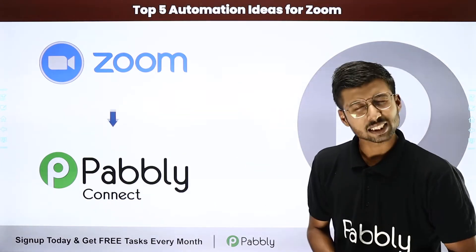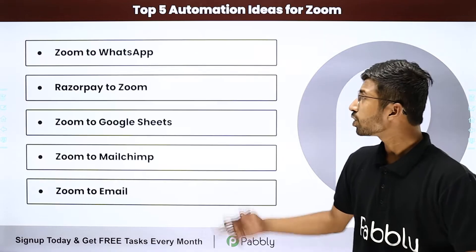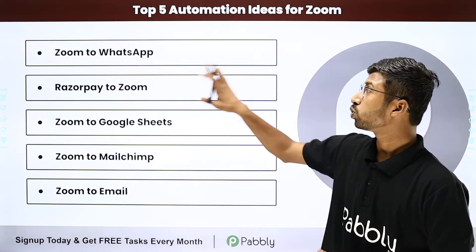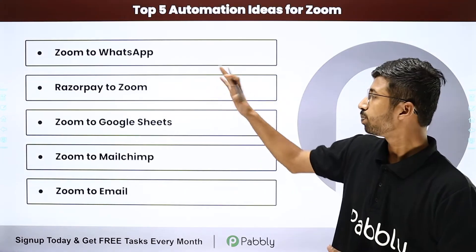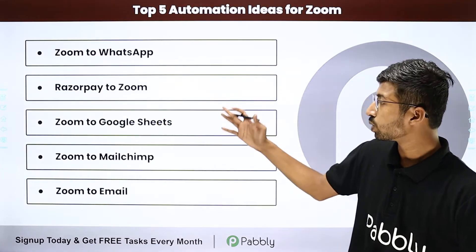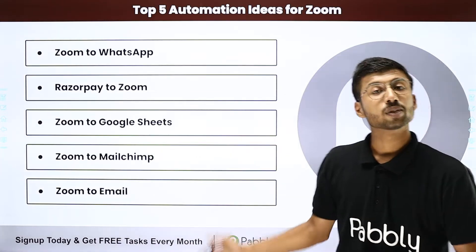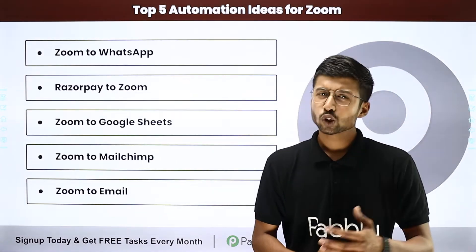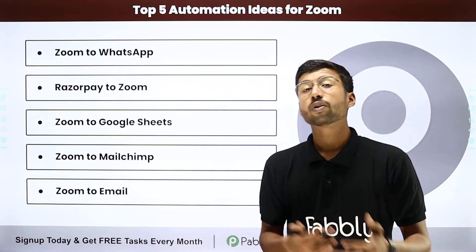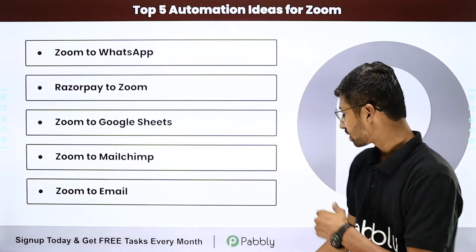Let's have a look at them first. The automations we'll cover are: Zoom to WhatsApp, Razorpay to Zoom, Zoom to Google Sheet, Zoom to MailChimp, and Zoom to Email. Let's start with the flow of these automations.